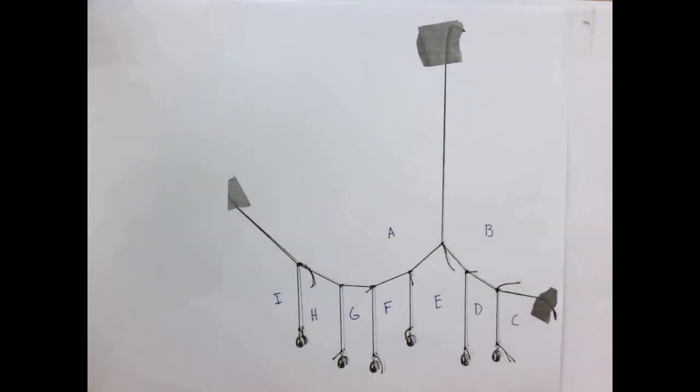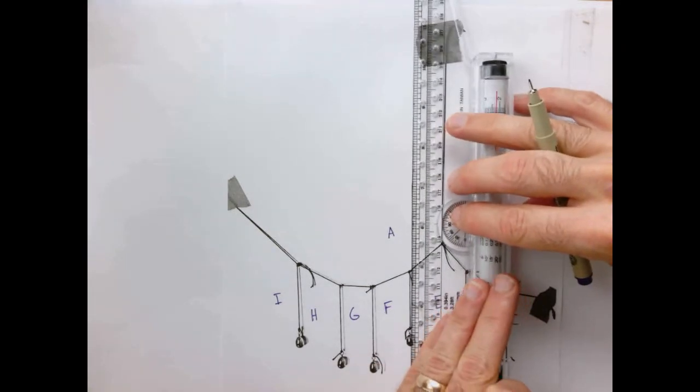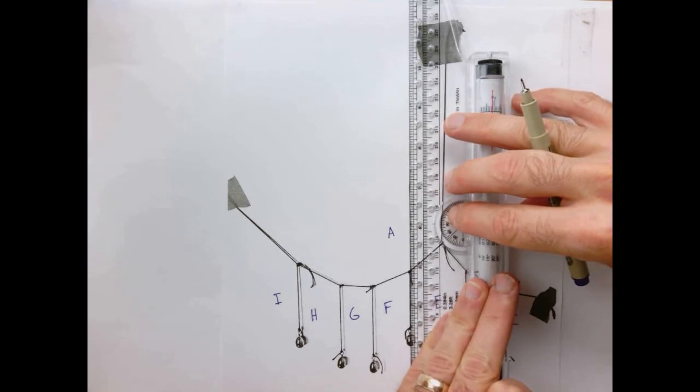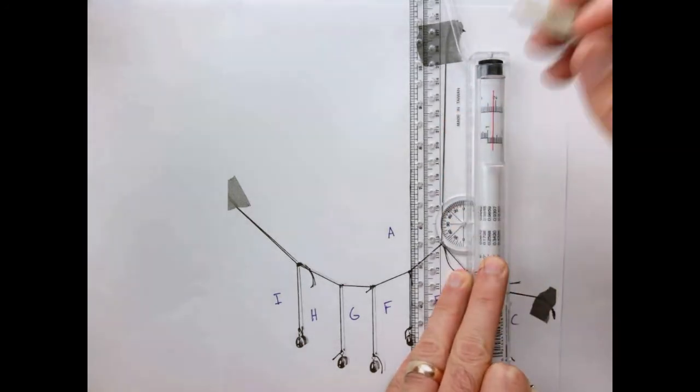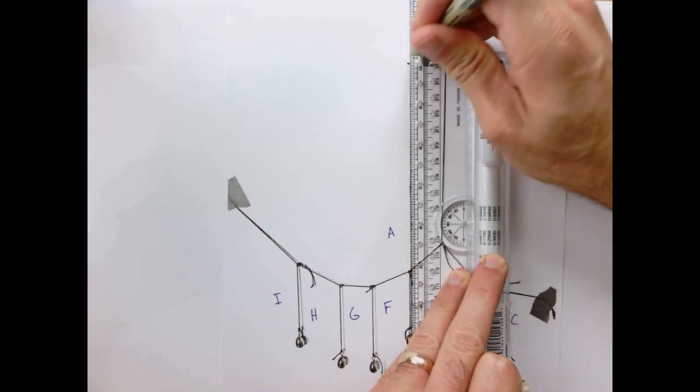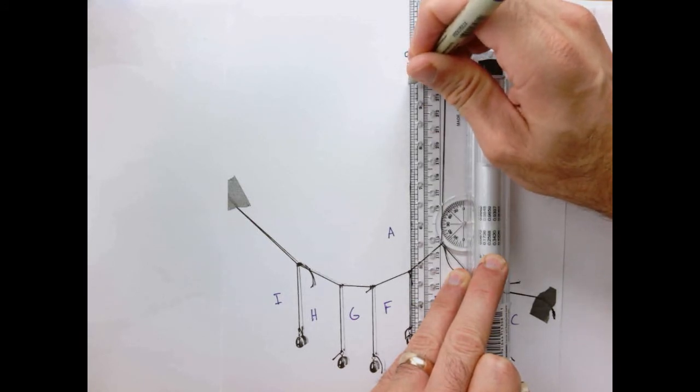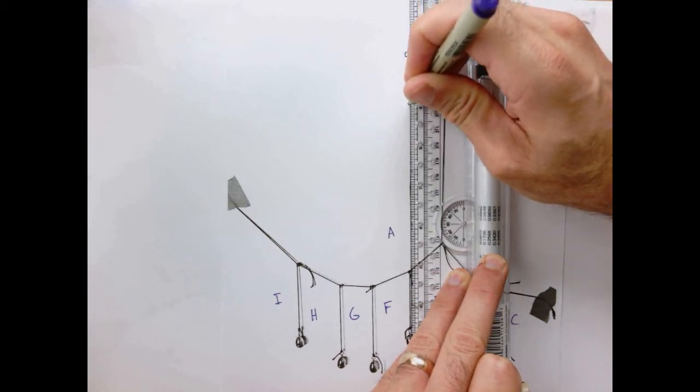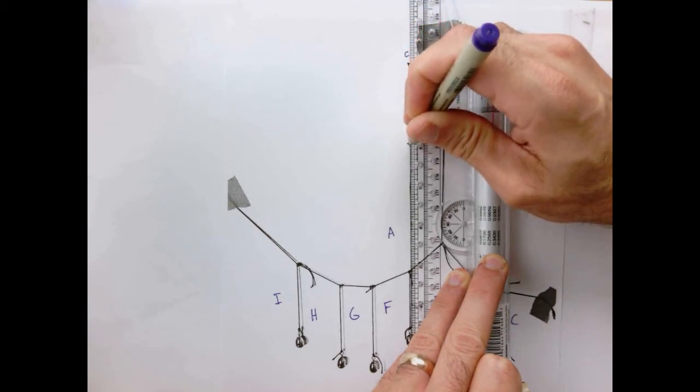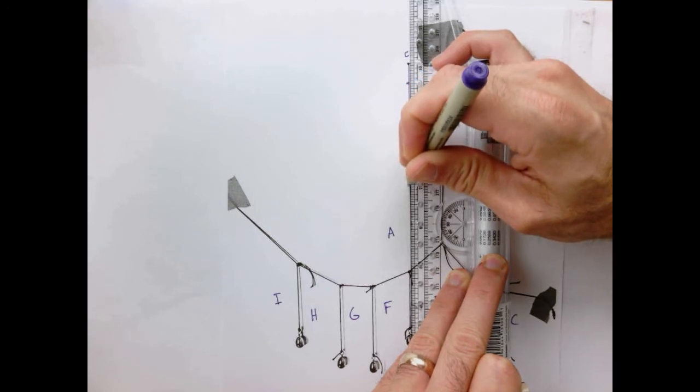Now I need to draw my load line. I've got six vertical weights, so I'm going to draw those first. Since we've got a lot of weights now, I'm going to use a half inch as my scale. So I'm going to start here at point C, and then I go one, two, three, four, five, and six.